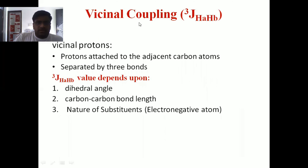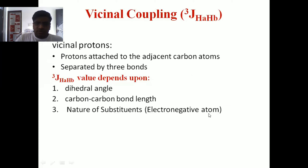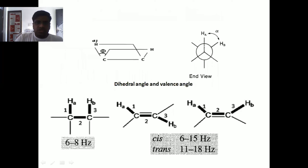The second type of coupling is vicinal coupling, denoted by superscript ³J_HC_HB. These two non-equivalent protons are three bonds apart from each other — HA and HB are not present on the same carbon atom. Vicinal protons are protons attached to adjacent carbon atoms, separated by three bonds. The vicinal coupling constant value depends upon the dihedral angle, the carbon–carbon bond length, and the nature of substituents — whether electronegative or electropositive — attached to the carbon atoms.